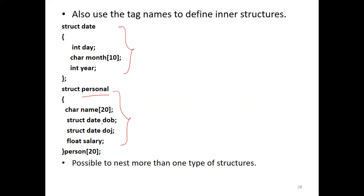We can define the name of the prime member. Here is what we can do — we are defining the date structure variable for the corresponding date structure. The date is the corresponding structure variable. This is the member, this is the date of duty. It is possible to nest more than one type of structure.